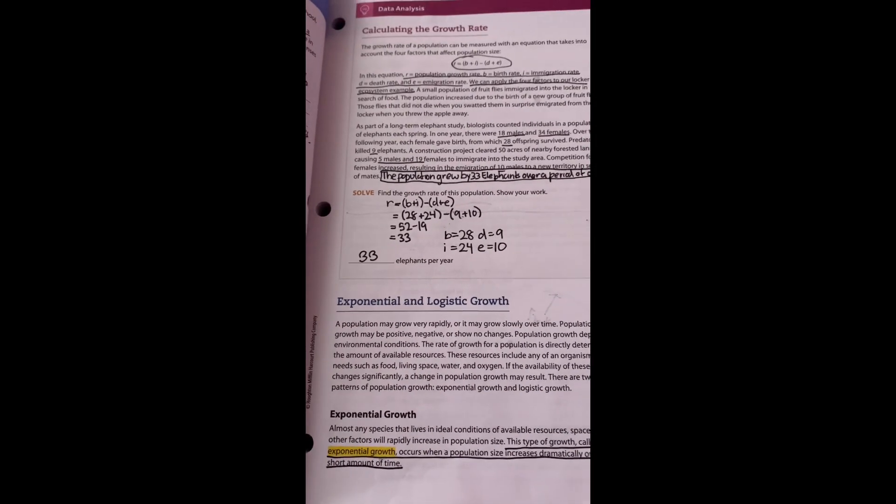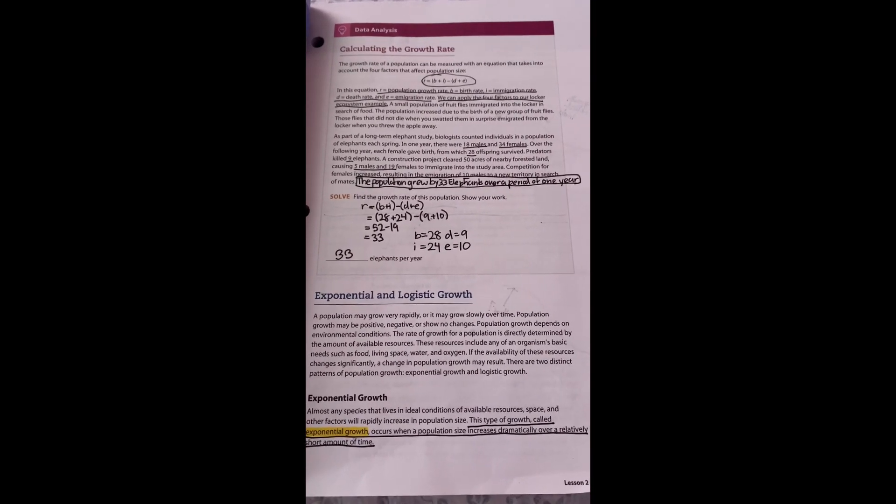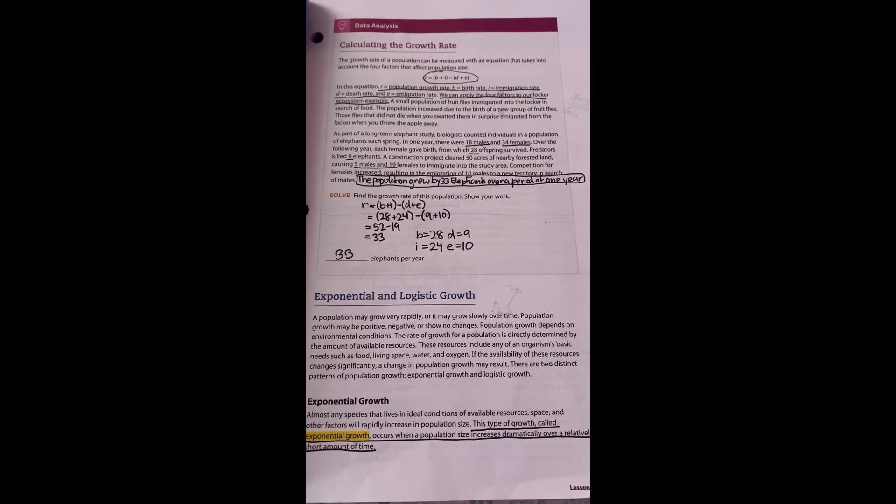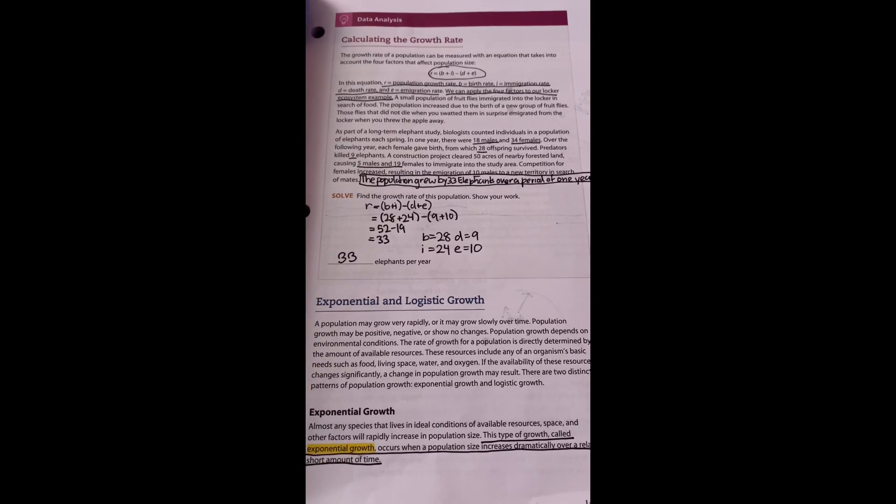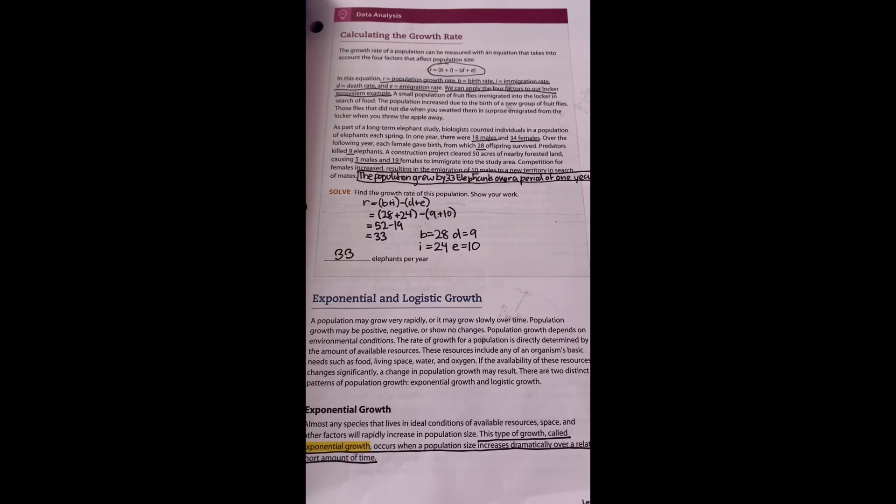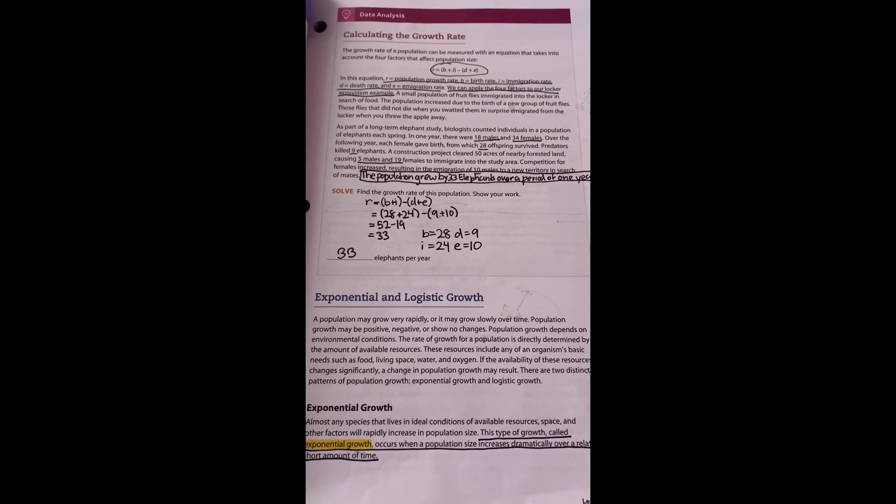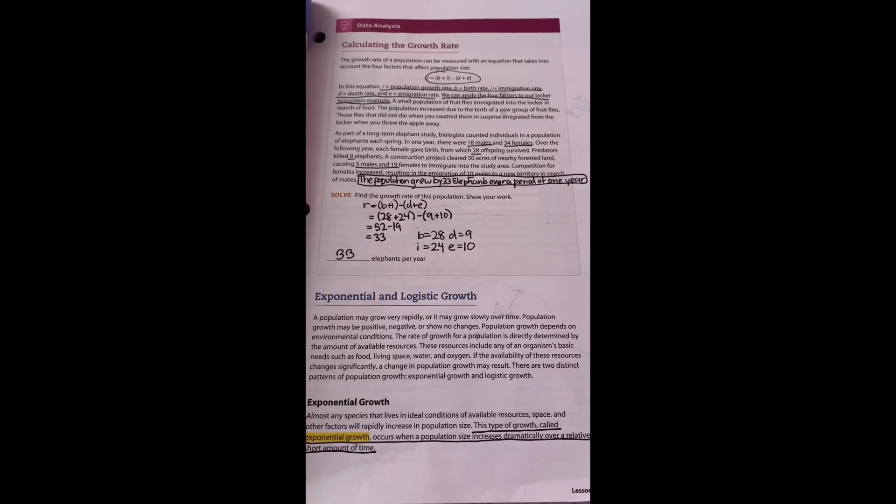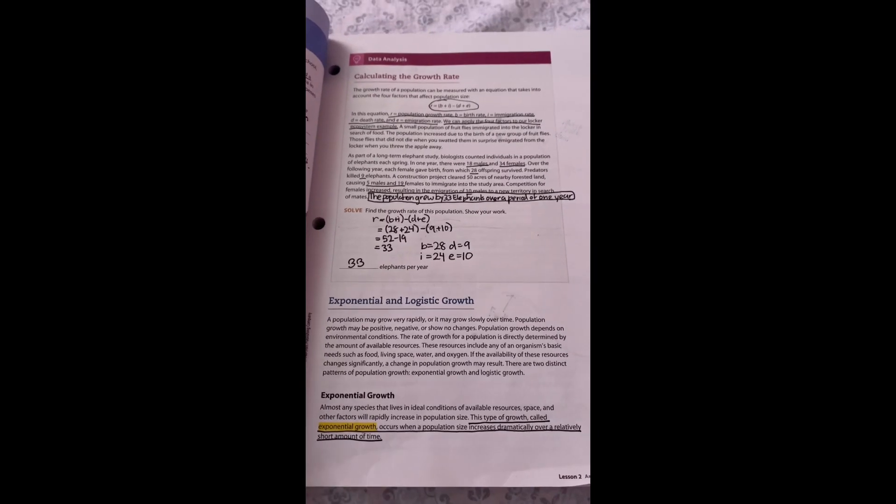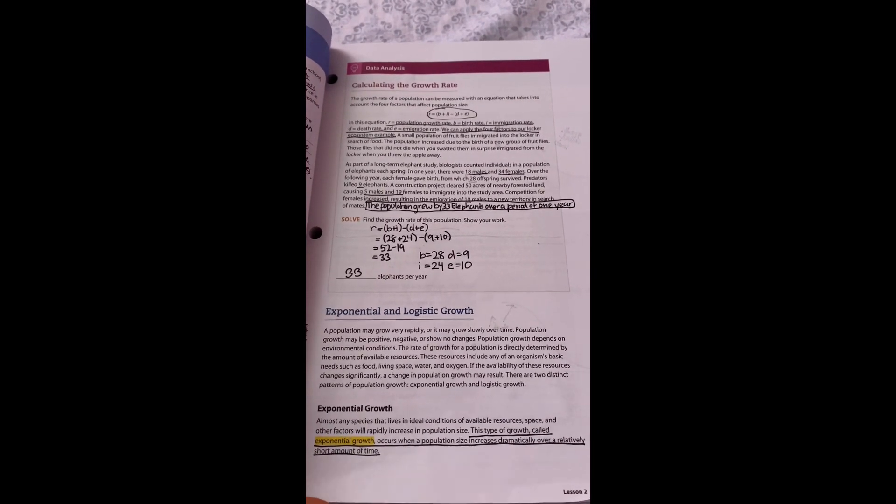Exponential and logistic growth. A population may grow rapidly or slowly over time. It may be positive, negative, or show no changes. Environmental conditions are a factor. The rate is determined by the amount of available resources like food, living space, water, and oxygen. If the availability of these resources changes significantly, a change in population growth may result.